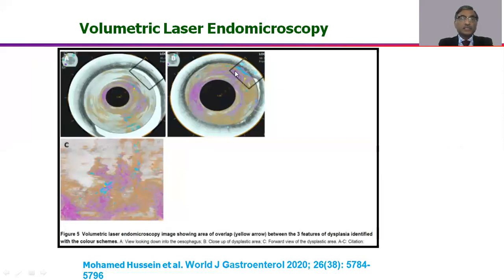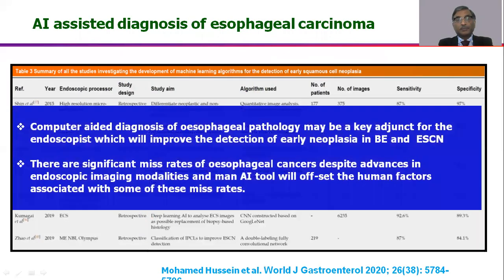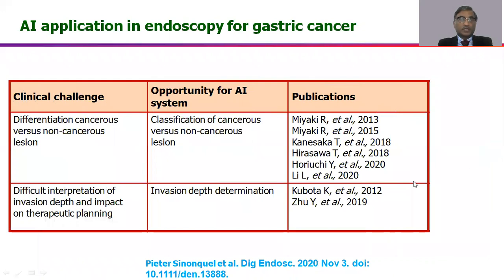Volumetric laser endomicroscopy, based on optical coherence tomography, allows AI to mark suspicious areas in different colors. AI assistance provides reasonable sensitivity and specificity for the diagnosis of malignant esophageal lesions and decreases the miss rate for esophageal cancer even for the most experienced endoscopists.